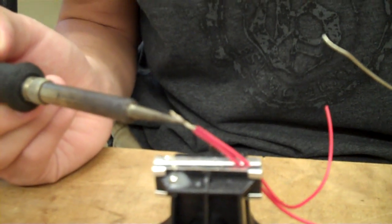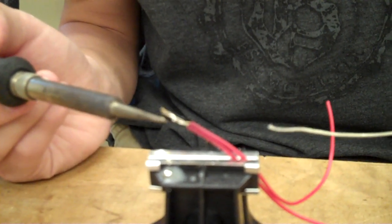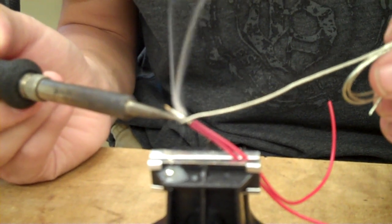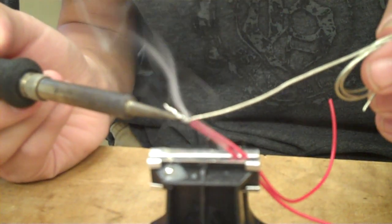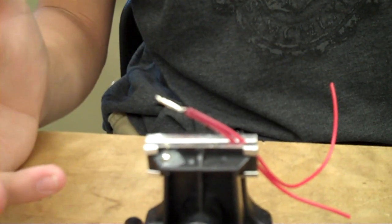Just touch the iron to the wire and make sure that it's nice and hot. Once you're sure that it's hot, you can feed the solder into it and it will coat itself along the wire, firmly soldering the two pieces together. And there you have it.